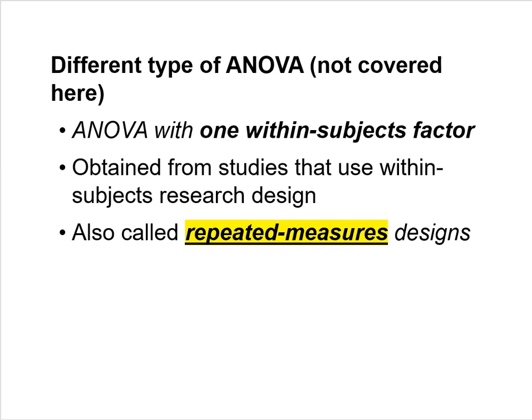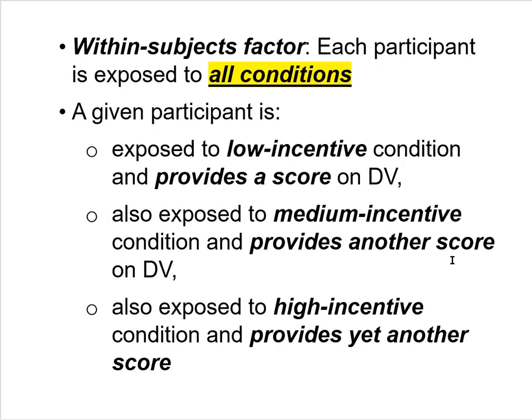A different kind of ANOVA — not covered in this module — is ANOVA with one within subjects factor. You use this to analyze data from studies using a within subjects research design, also called a repeated measures research design. A within subjects factor is one in which each participant is exposed to all of the conditions.